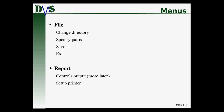Let's quickly run over the main menus. The file menu does what you would expect: it changes directories, allows you to specify paths to new working directories, save files, and exit. The reports menu controls your output formatting, printers, and directions — we'll talk more about that in another set of tutorials.